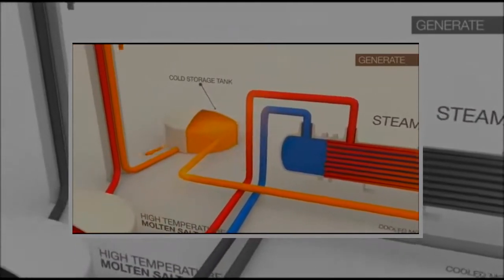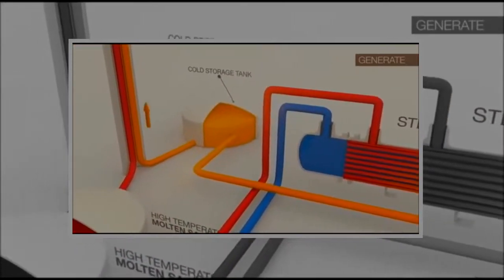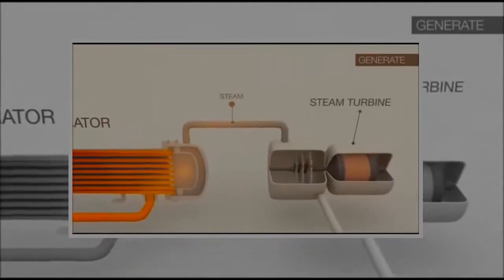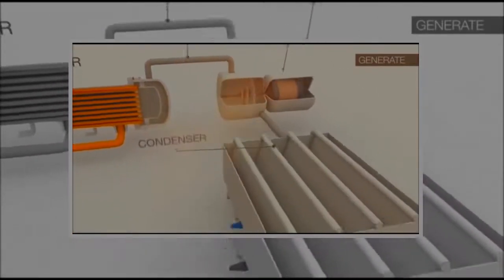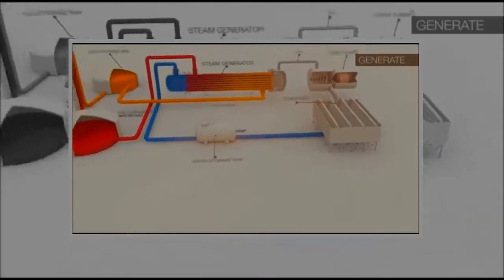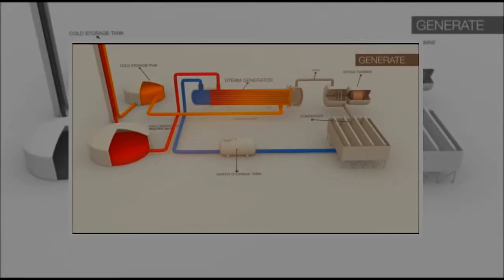After the steam is used to drive a steam turbine, it is condensed back to water and returned to the water holding tank where it will flow back into the steam generator when needed.